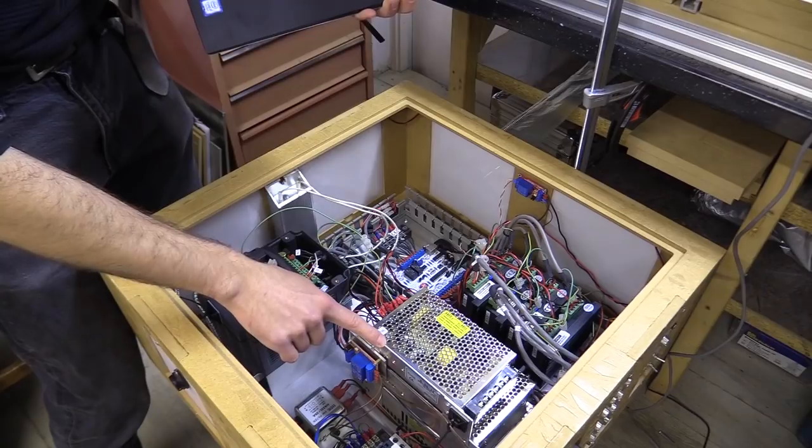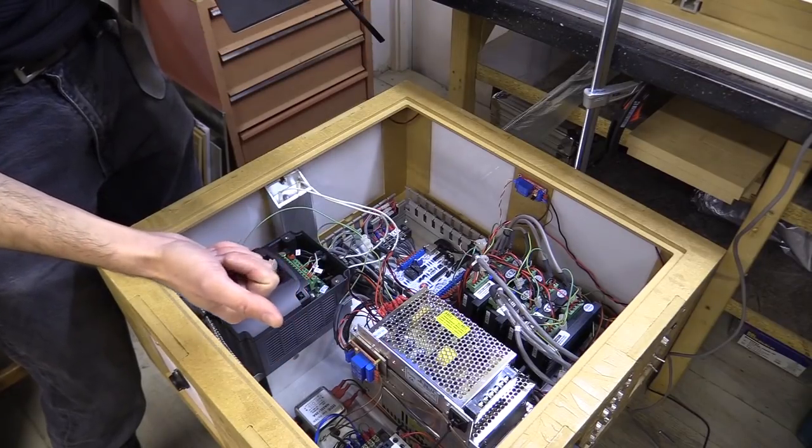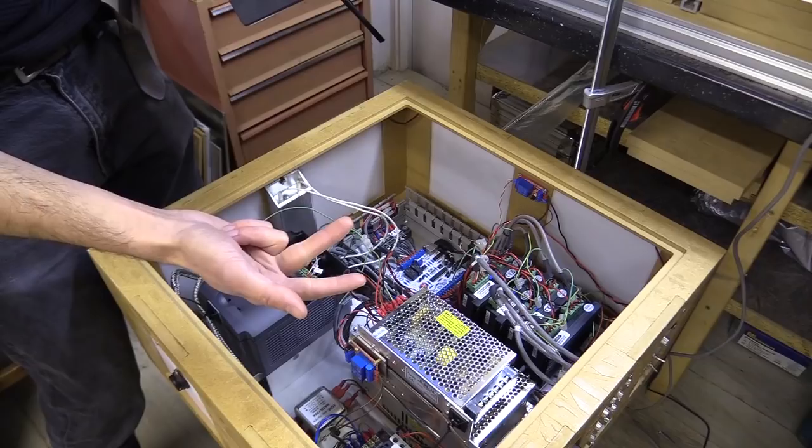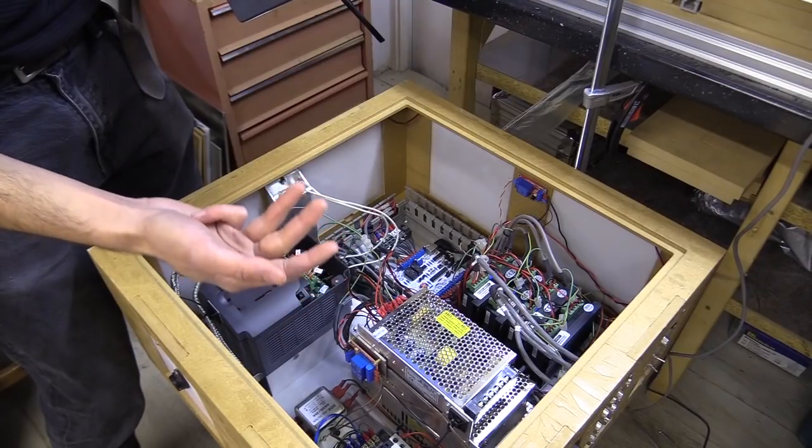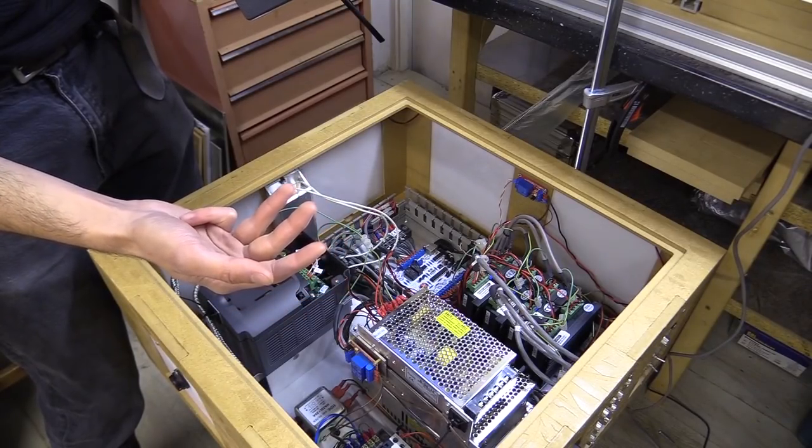In retrospect my hard limit switches, the homing proximity sensors, stepper motors and controller could be run from a single 24V power supply unit, which would have been a lot easier to wire up.